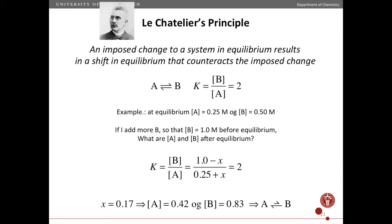Now let's say I add more B, so that before equilibrium the concentration of B is now 1. So the question is then what happens to the equilibrium because of this addition of B? And so that we can see here below.